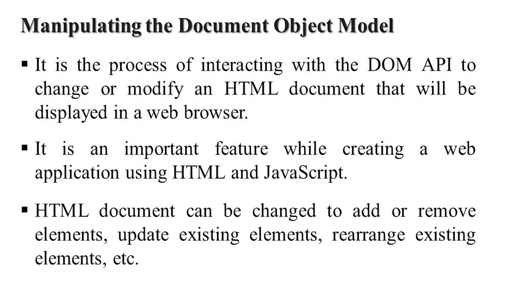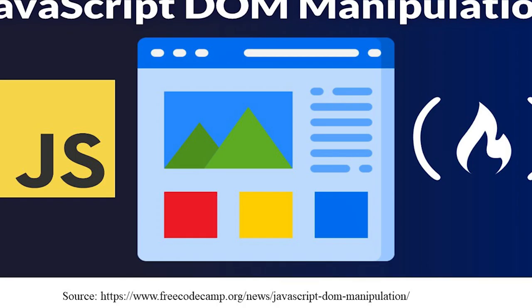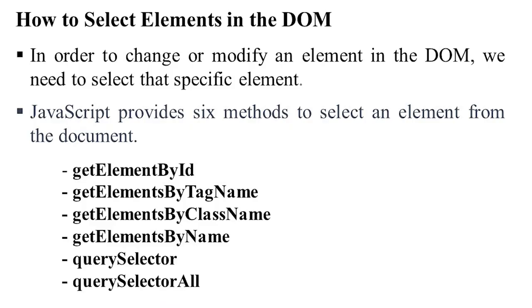An HTML document can be changed to add or remove elements, update existing elements, arrange existing elements, and so on. JavaScript basically works only through DOM manipulation. There are six ways we can select elements in the Document Object Model to change or modify content.